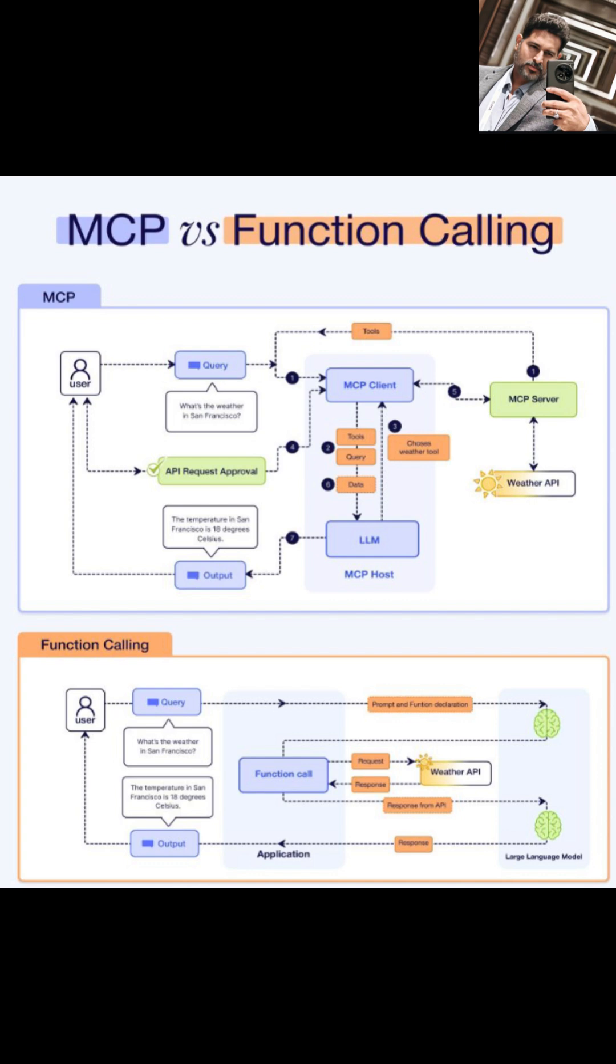Hey, I'm about to call an external API, is that okay? Once you approve, the client makes the API call through the MCP server. It fetches the weather data and passes it to the LLM. The LLM processes the info and returns a natural answer. The temperature in San Francisco is 18 degrees Celsius. So MCP is like having a smart, trustworthy assistant that checks in before taking action and knows how to use different tools based on your needs.